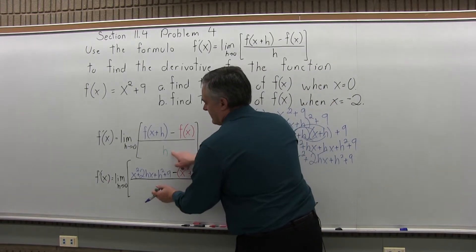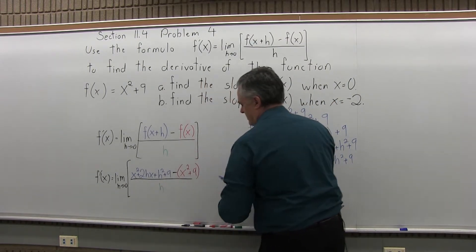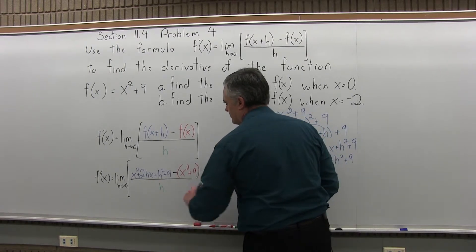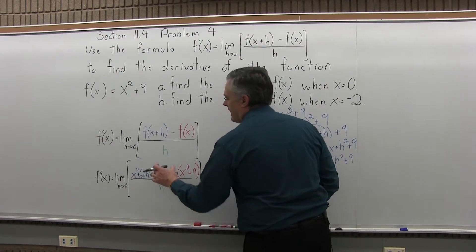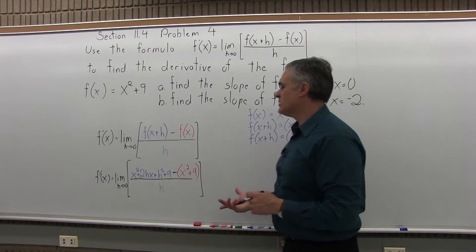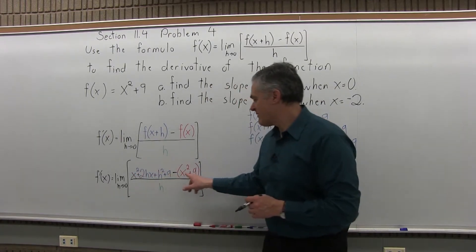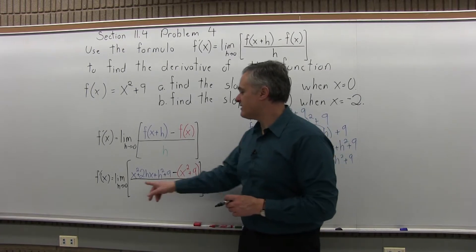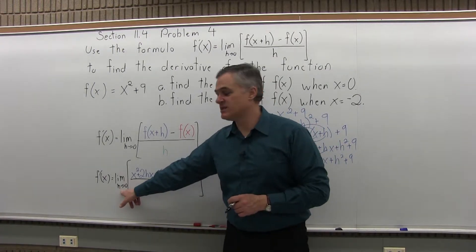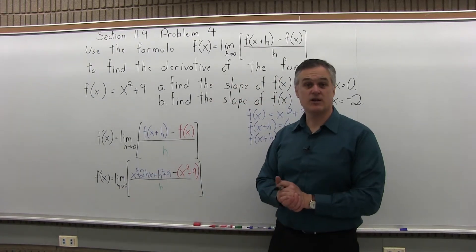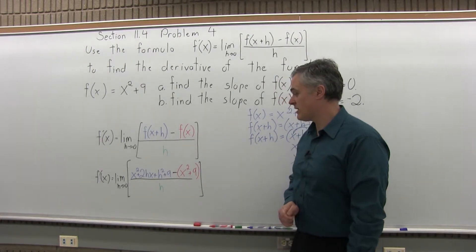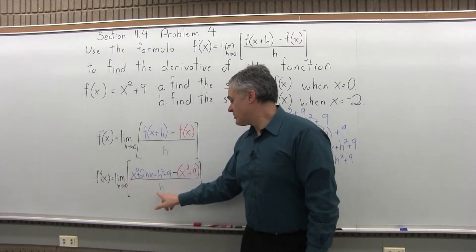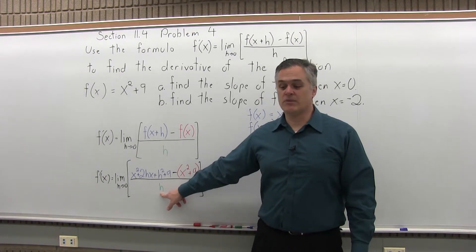Then in the denominator, I just have h, and I will close my brackets. This is the limit I have to take. This will give me the derivative. Now that I have it filled in—the blue portion, the red portion, the green portion—I have to take this limit as h runs down to zero, and that will be the derivative. The problem is, I can't let h run down to zero and I have an h in the denominator.